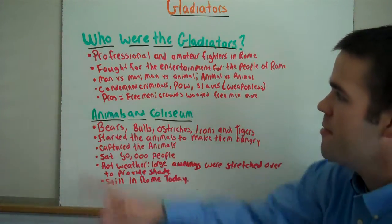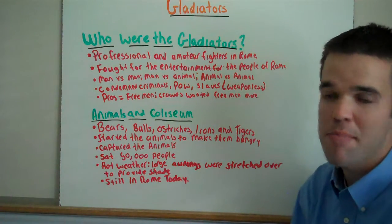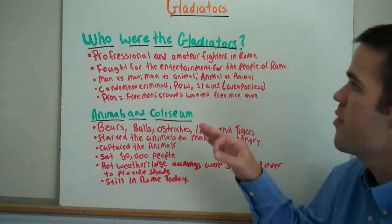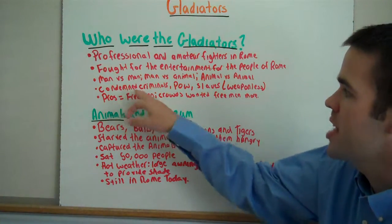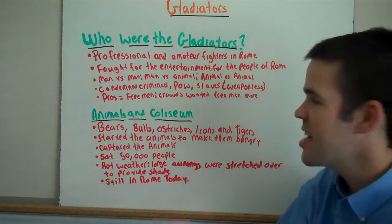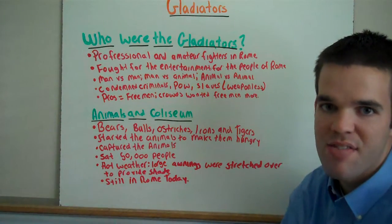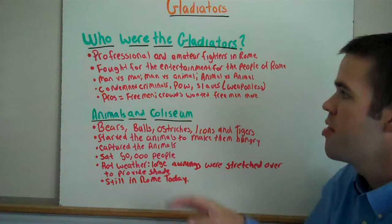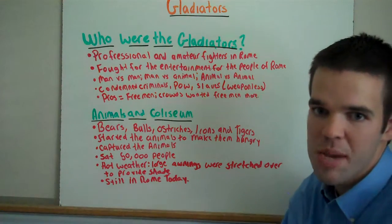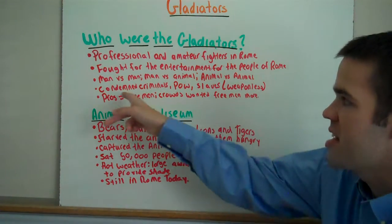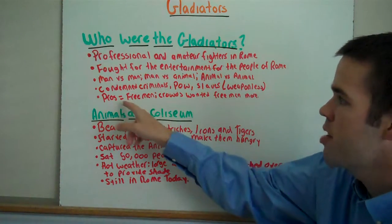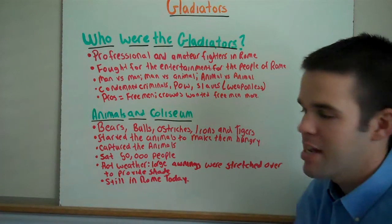It was oftentimes man vs. man, man vs. animal, and sometimes even animal vs. animal. There were three main types of amateurs: condemned criminals, POWs — prisoners of war — and slaves. Oftentimes these three groups came in weaponless, without weapons. The professionals were often free men, and the crowds typically wanted to see free men more than they wanted to see the amateurs.